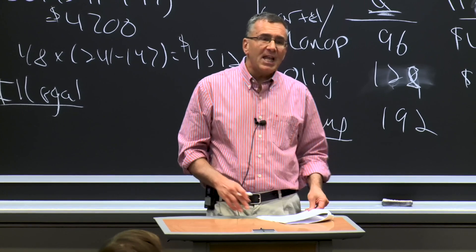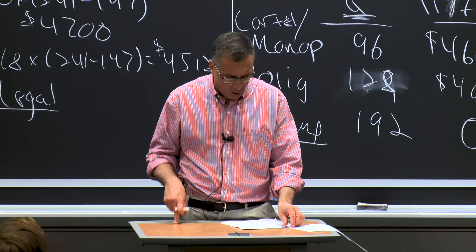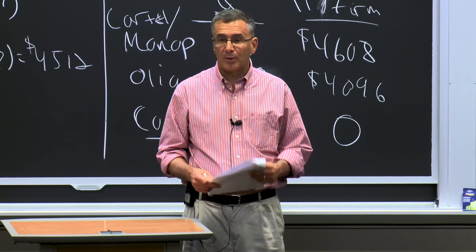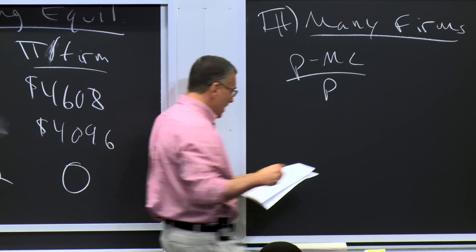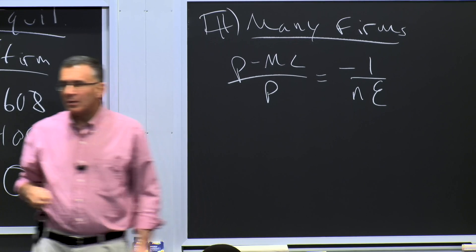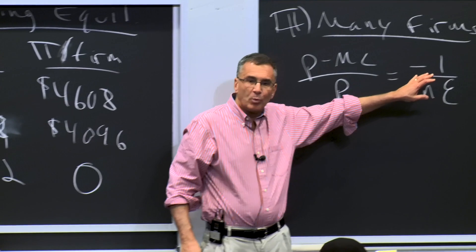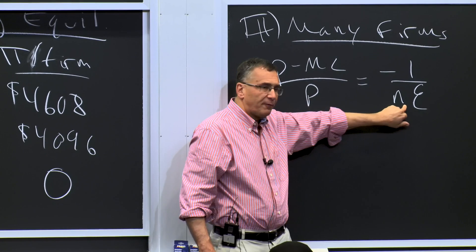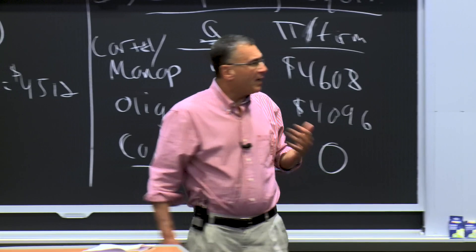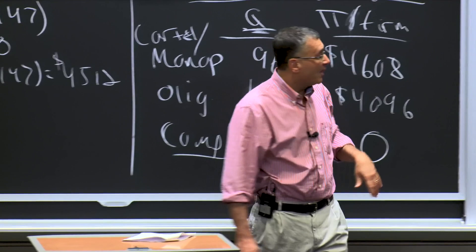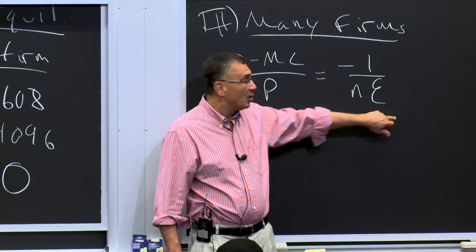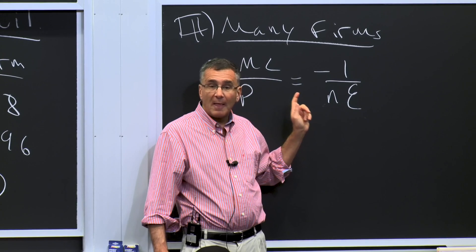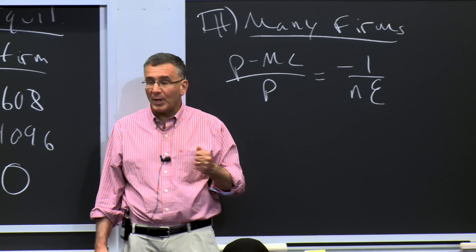The key bottom-line result is that as the number of firms gets large, the Cournot equilibrium approaches the competitive equilibrium. Mathematically, the markup that firms earn equals minus 1 over n times the elasticity of demand — in a symmetric Cournot market. The markup is 1 over the number of firms times the elasticity of demand. Think about this: if there is one firm, the markup equals minus 1 over the elasticity of demand. Where have we seen that before? That's the monopoly markup condition.